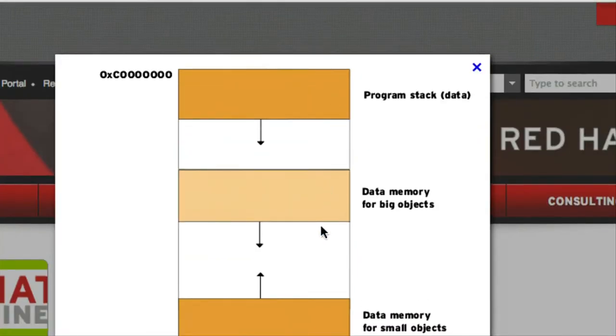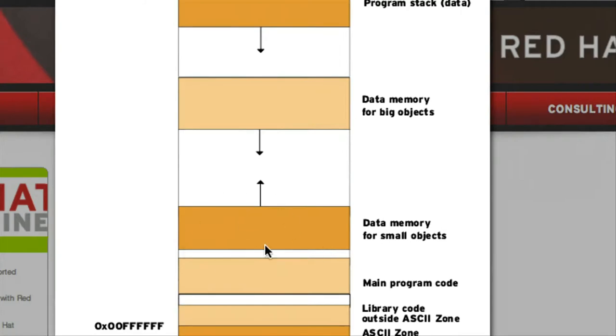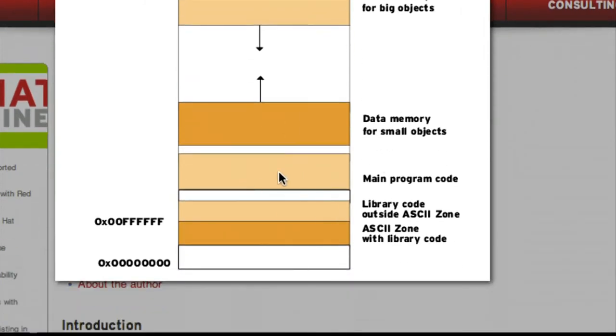There's also this idea of executable memory, where the executable memory would be the text segment of your code. Looking at your usual address space layout: we have our stack up here, we have data memory, this is our heap, and down here is our main program code. This is similar to where we put strings like char *s = "hello" in that it's read-only, but you could also mark this main program code as executable.